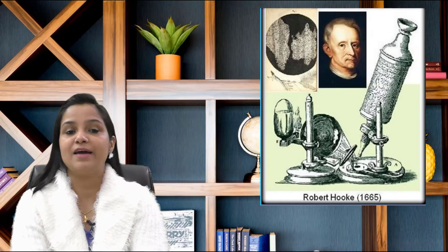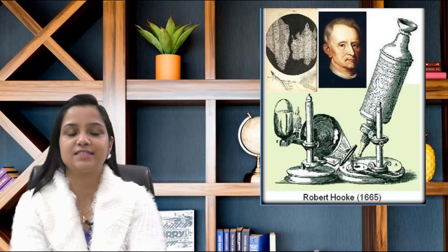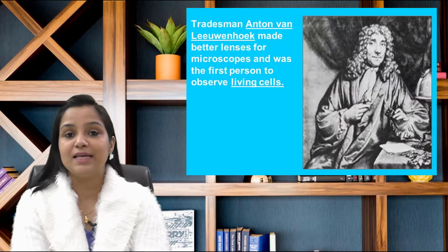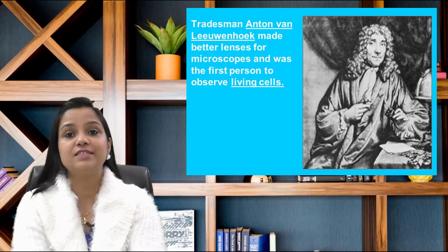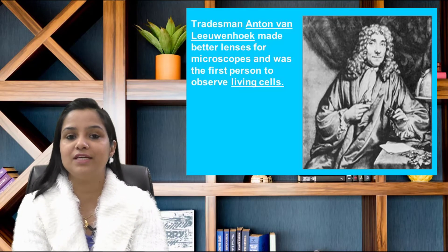1. The cell was first discovered and named by Robert Hooke in 1665. 2. Anton von Leeuwenhoek first saw and described a living cell.